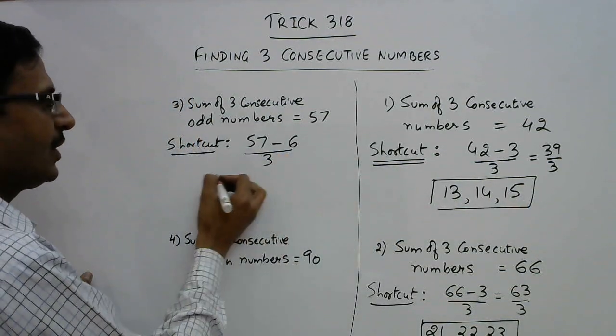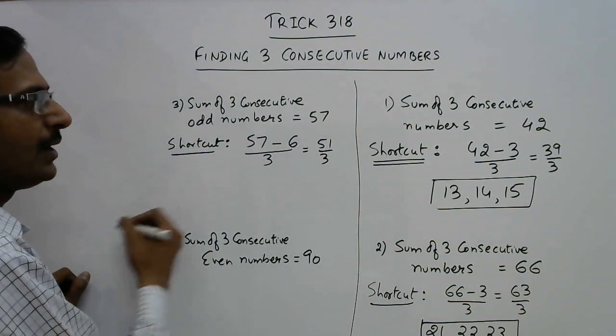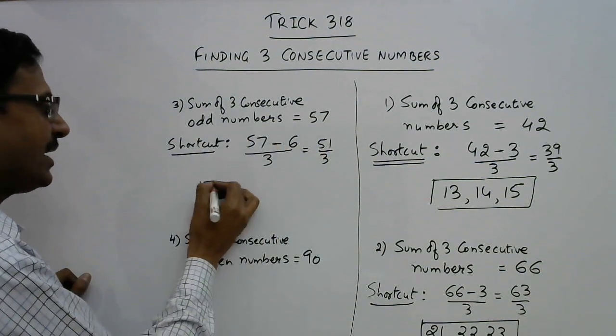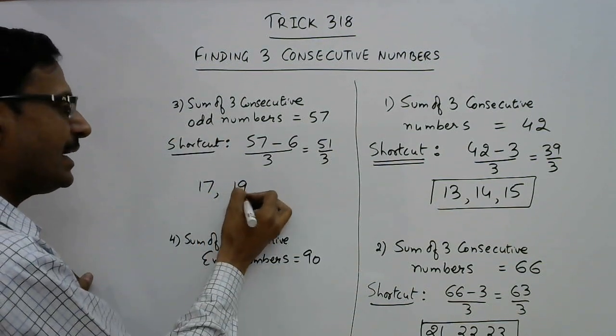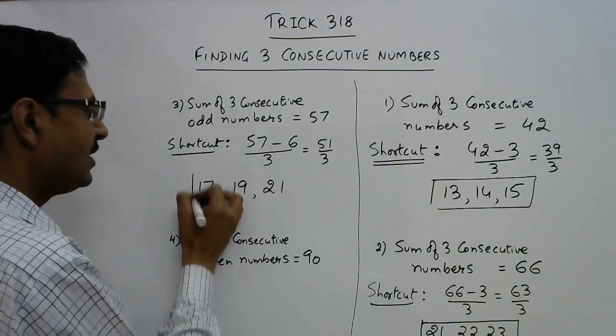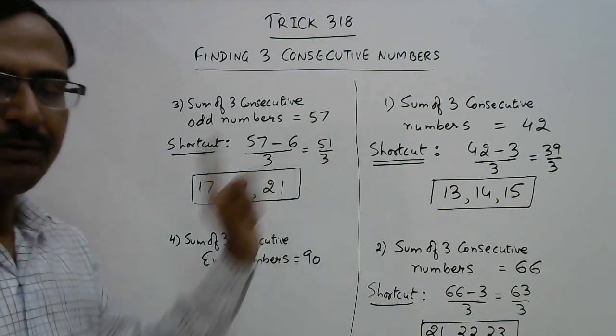This time you get 51 upon 3. The first number, 51 upon 3, is 17. Since they are consecutive odd numbers, after 17 you get 19 and after 19 you get 21. The sum of these three numbers will be 57.